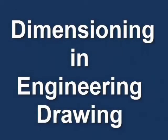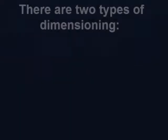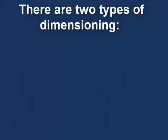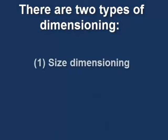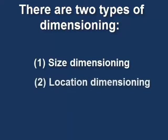Dimensioning in engineering drawing. There are many aspects to dimensioning in engineering drawing. Here I would like to mention about the placing of dimensions. But before that, let me tell you that there are two types of dimensioning: the first is size dimensioning and the second one is location dimensioning.